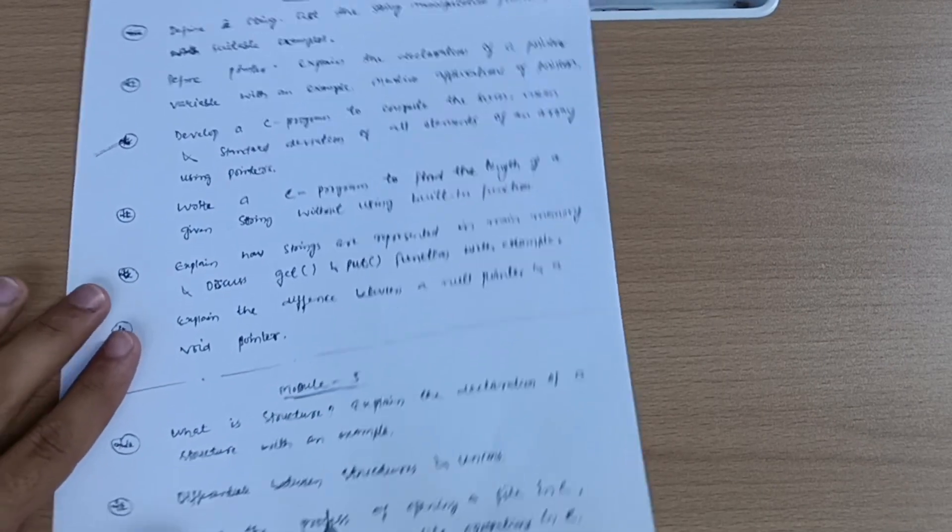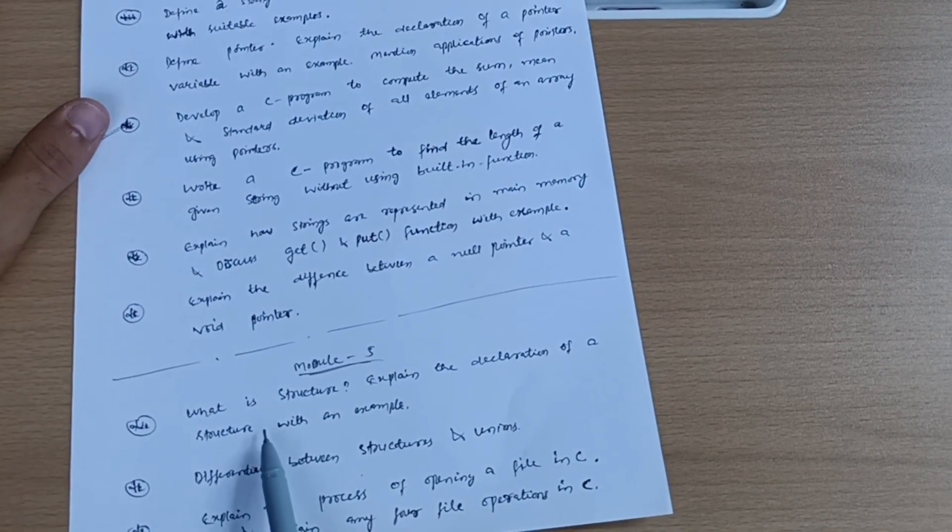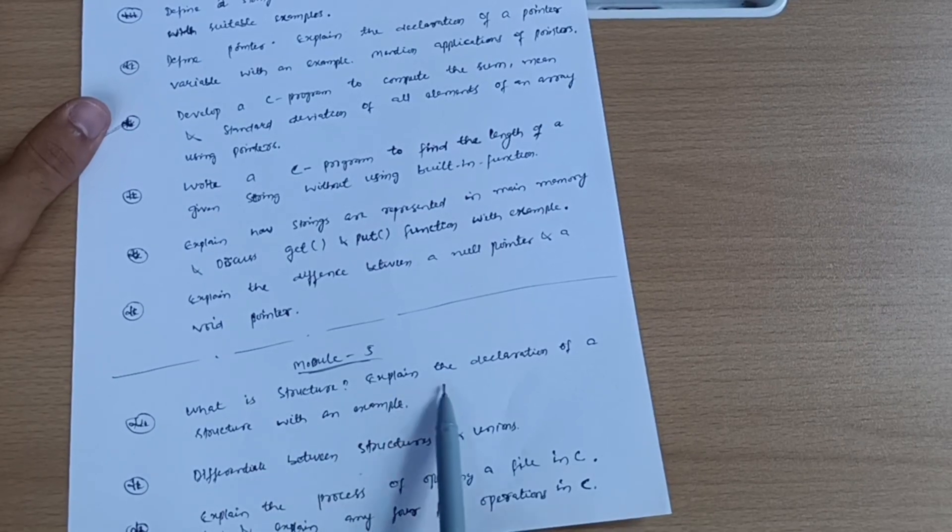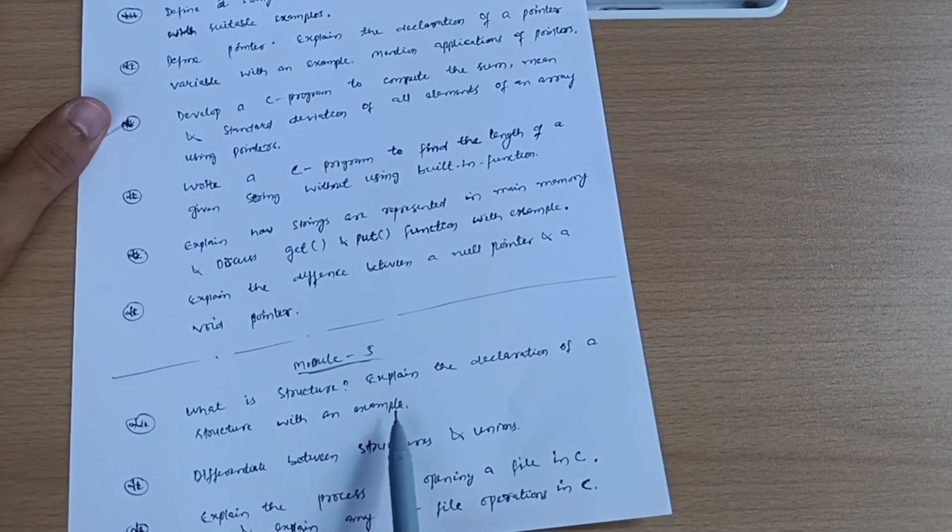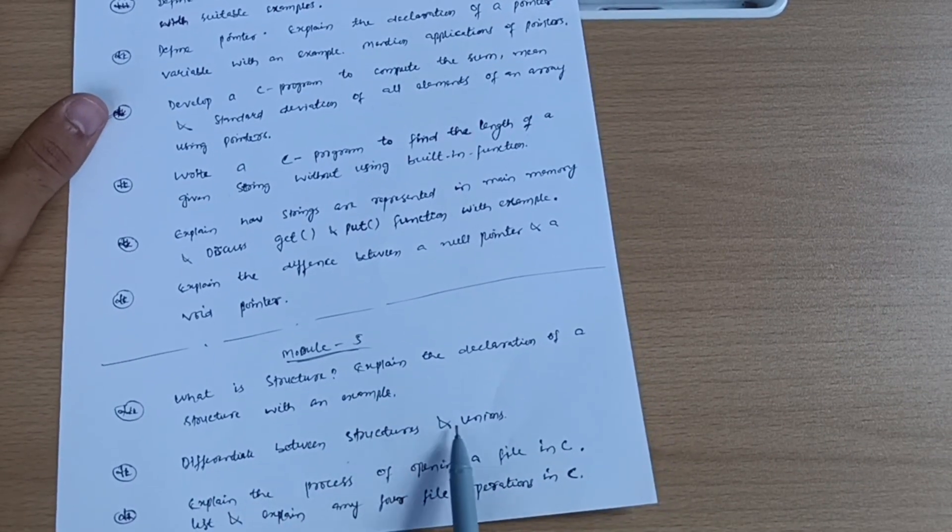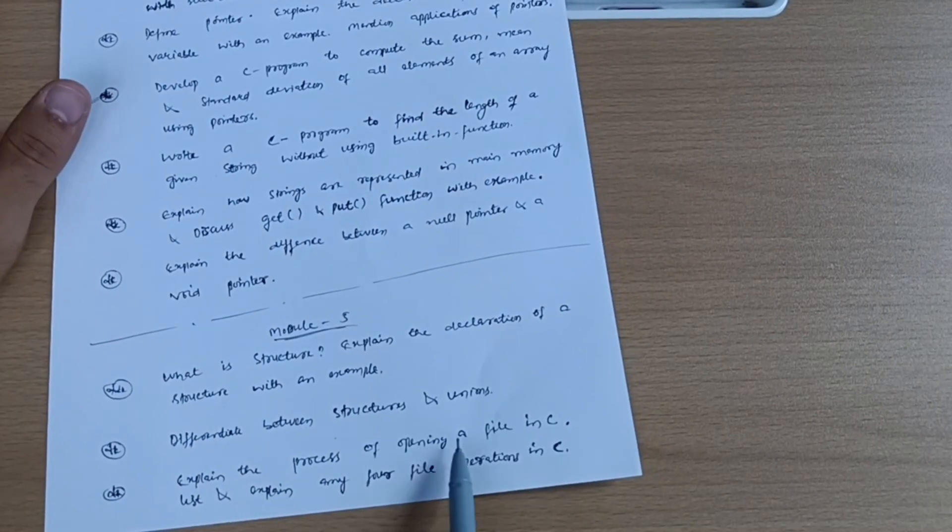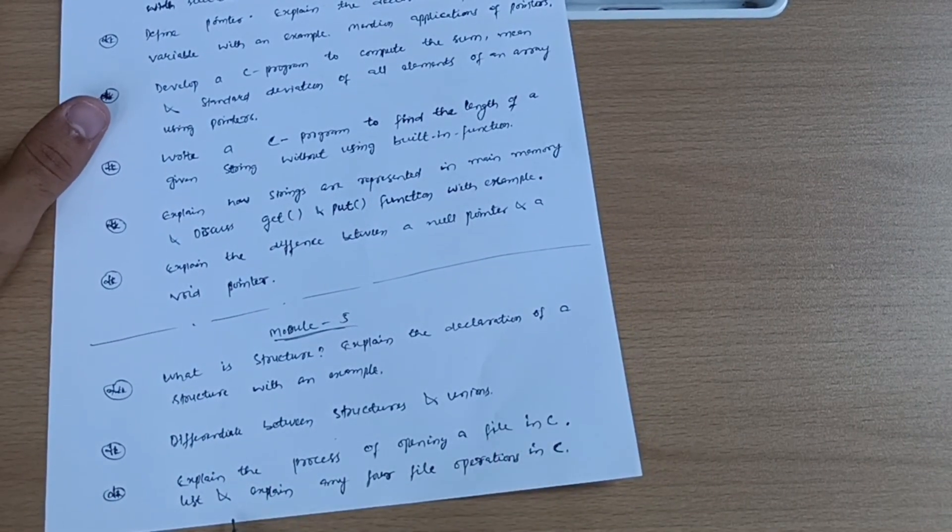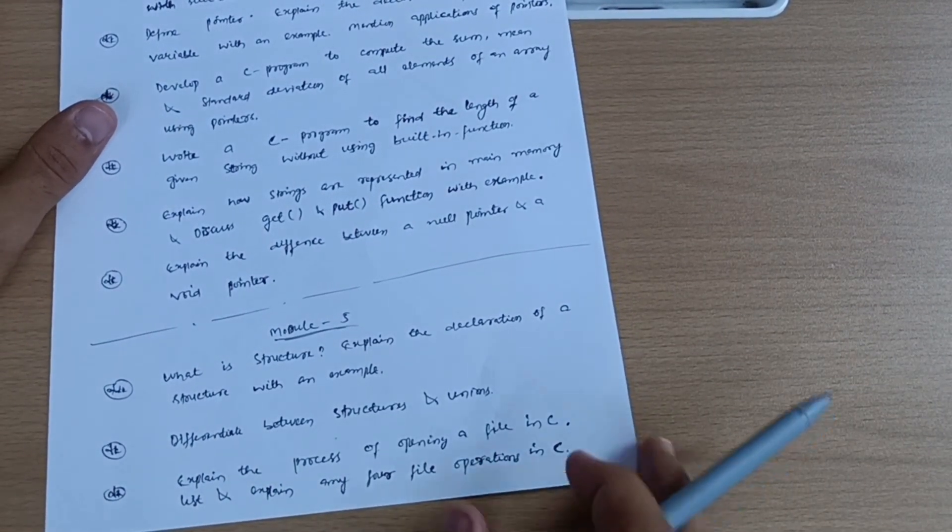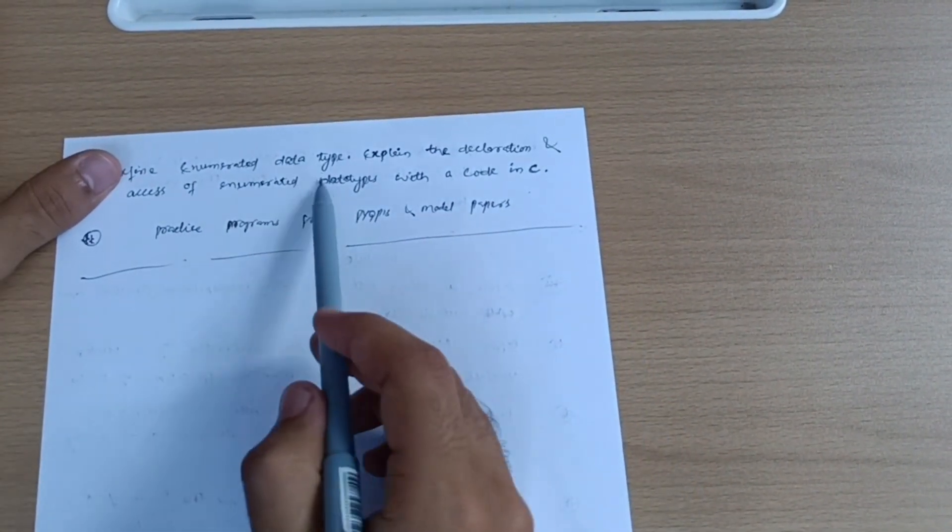Next is module fifth in which you have to cover questions like: what is structure, explain the declaration of structure with example, differentiate between structures and unions - super important - explain the process of opening and closing a file in C.